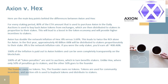Axion has double the network inflation of HEX — 8% versus 3.69% — leading to twice the ROI alone. For Axion, in the first year, approximately 40 billion AXN will be distributed to stakers proportionately to their stake. 8% is the network inflation rate. If you were the only staker, you'd earn all 40 billion AXN. 100% of the inflation is paid out to Axion holders and can be seen completely transparently on the blockchain.